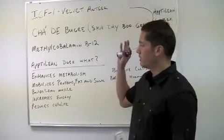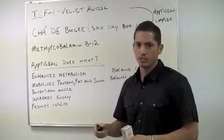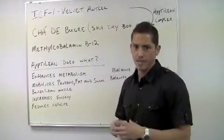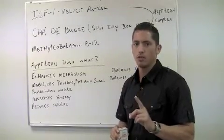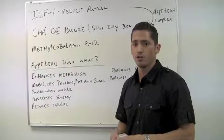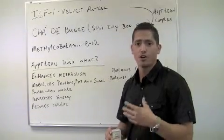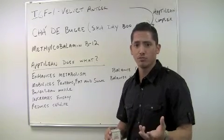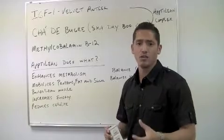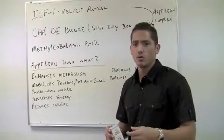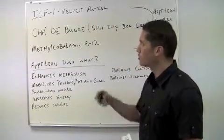Also, the IGF-1 and velvet antler builds lean muscle mass. What lean muscle mass is going to do for your body is it's going to speed your metabolism up. What I mean by that is for every pound of lean muscle mass you put on, you're going to burn an extra 30 to 50 calories a day. So if you put on 5 extra pounds of lean muscle, you can burn almost an extra 250 calories a day without changing your diet, without changing your workout regimen whatsoever.